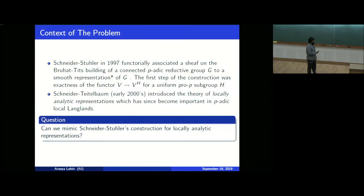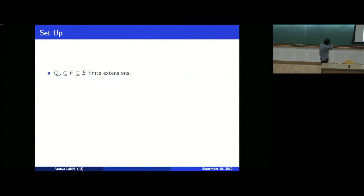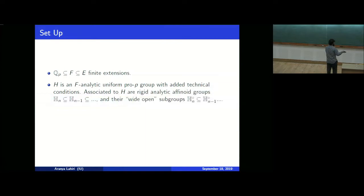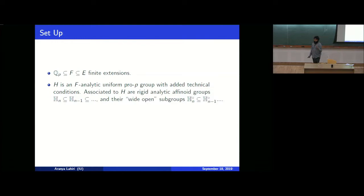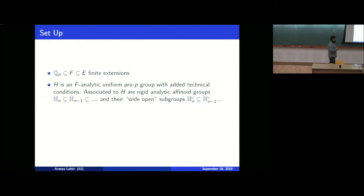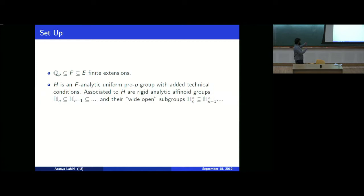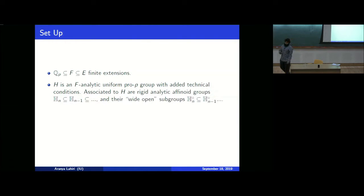Before that I'll set up. We have finite extensions of Q_p, F and E, where E is always my coefficient field. We fix an F-analytic uniform pro-p group H. I am not going to define all the technical details about uniform pro-p, but if you have a p-adic analytic group, it always has these kinds of open subgroups. The extra technical conditions are basically conditions on the Lie algebra associated to H, and some sort of O_F-invariance where O_F is the ring of integers of F.